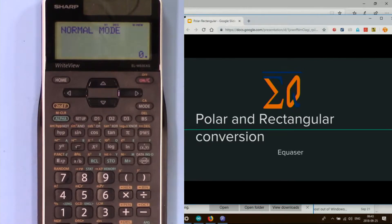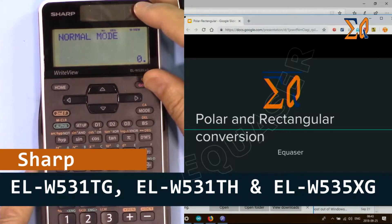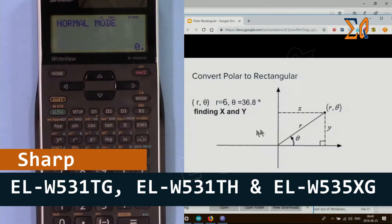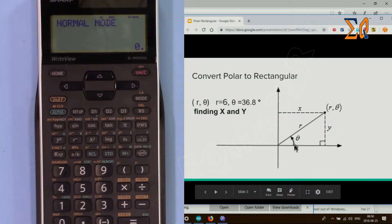Hi, welcome to a calculator tutorial by Quasar. In this video we're going to see how we can use this Sharp calculator to do polar and rectangular conversion. In some classes they call it Cartesian, and some call it rectangular. Polar means we have a radius or magnitude and angle.